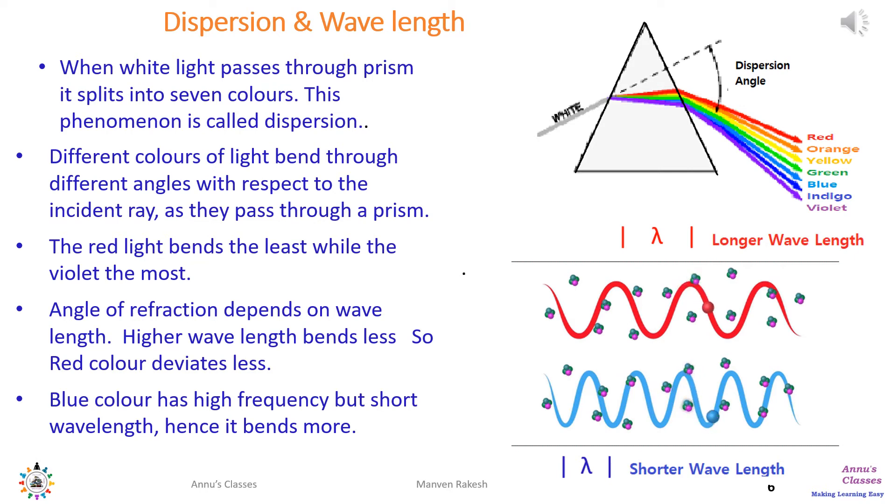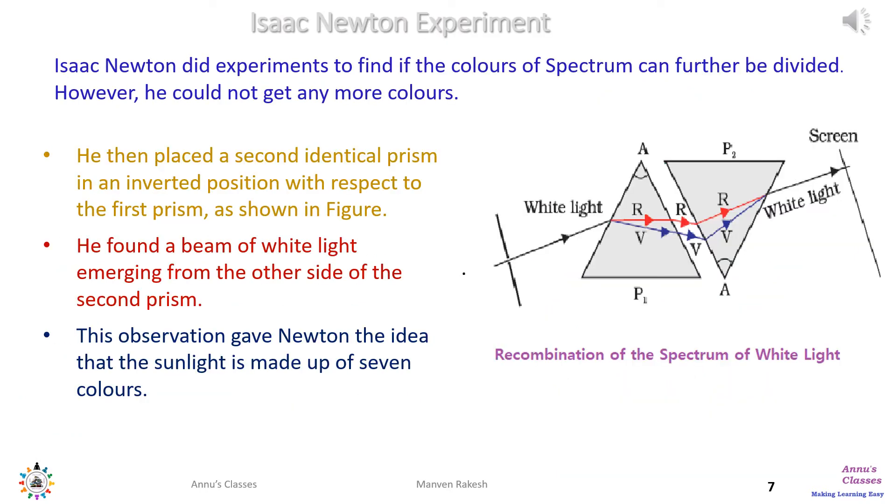If white light can be split into seven colors, can we make white light again from the seven colors? Isaac Newton did the experiment and found that further classification or division of the colors is not possible. He then placed a second identical prism in the inverted position next to the first prism.